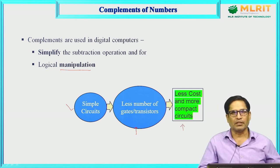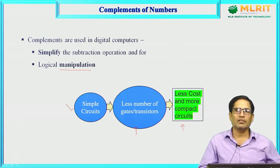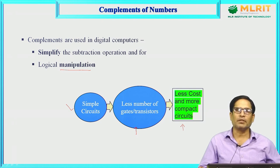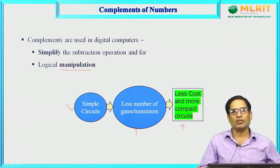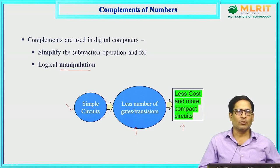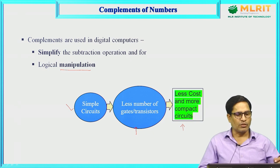The second purpose is logical manipulations — a Boolean expression can be manipulated for simpler results. If the circuit is simpler, fewer gates and transistors are required, resulting in less cost and a more compact circuit. The overall objective of digital circuit design is high speed and a minimum number of components.